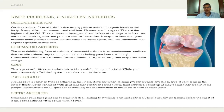Osteoarthritis is a common form of arthritis that may appear in one or more joints in the body. It affects men, women, and children, but most commonly women over the age of 45 are at highest risk. The condition causes pain from the loss of cartilage due to aging, which causes the bones to rub together and produce intense discomfort. It may also come from joint malformations present at birth, injuries, or indulging in active sports.